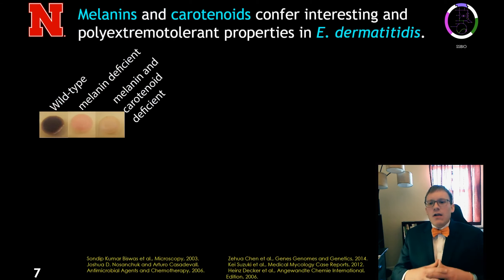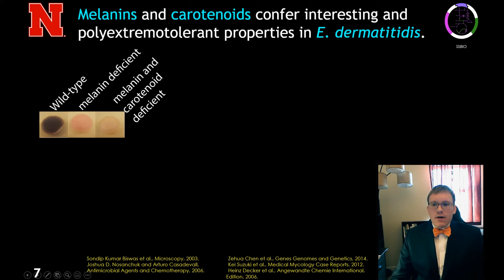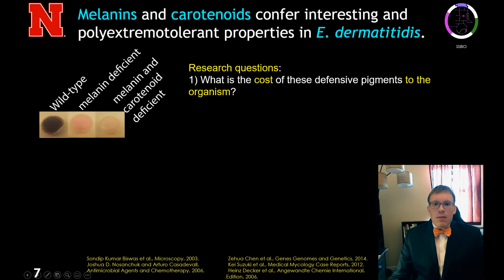The polyextremotolerant characteristics of Exophiala are conferred by two classes of pigments it produces: melanins and carotenoids. Melanins are a dark brown pigment that can also be found in humans. Carotenoids are a pinkish pigment. Melanins are deposited in the cell wall, whereas carotenoids are deposited in the cell membrane.